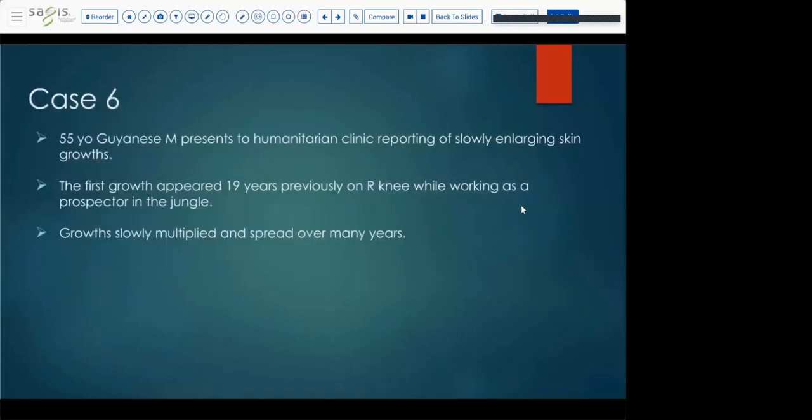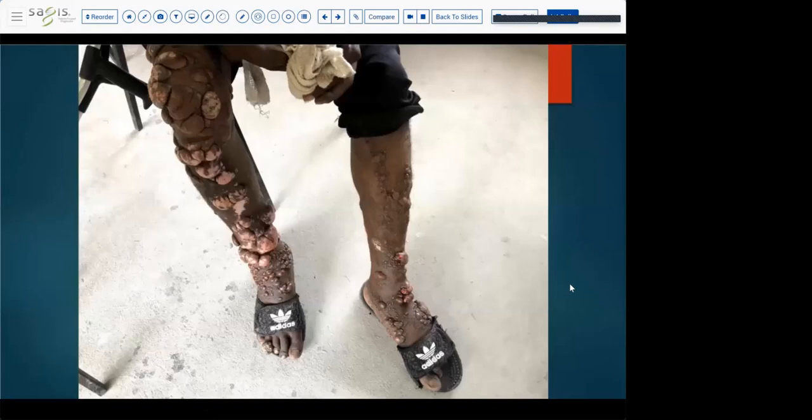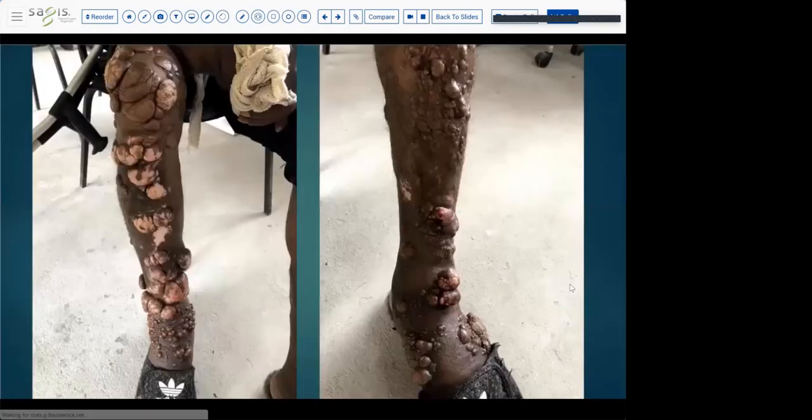Case six, the last case. This is a 55-year-old Guyanese male who presented to humanitarian clinic reporting the slowly enlarging skin growths. The first growth actually appeared 19 years previously on his right knee working as a prospector in the jungle, and the growth just slowly multiplied and spread over many years. This was 19 years in the making. This did not happen overnight. So certainly this is not some emergency, but biopsy is still very helpful to make the definitive diagnosis. These are the pictures from this patient. You can see all of these nodules, these large papular nodules kind of very exophytic in some areas, coalescing, almost keloidal in nature, which is part of what gives one of the different terms for this entity. These kind of keloidal exophytic nodules all over his legs. This is where it started, was on his legs.